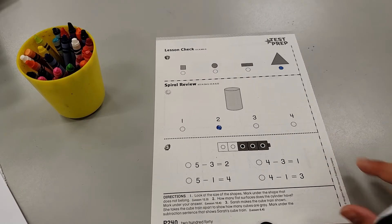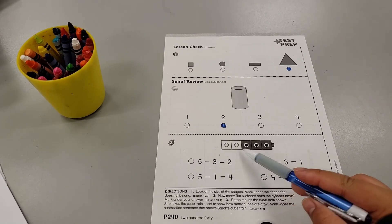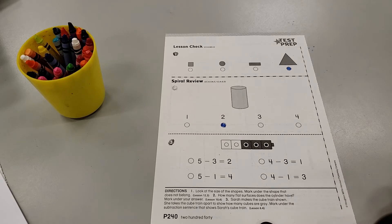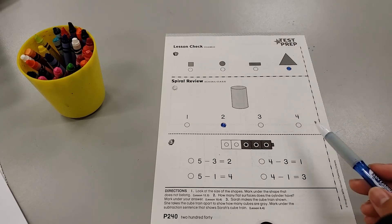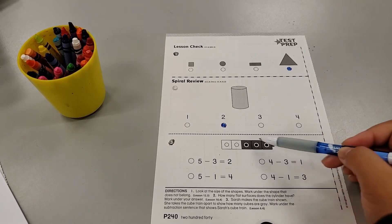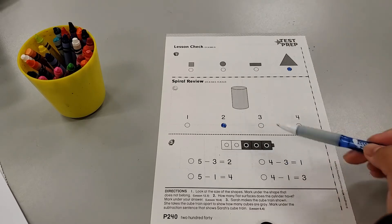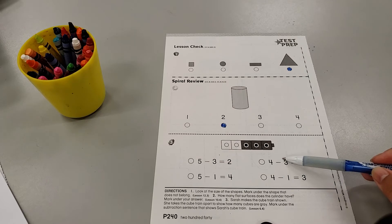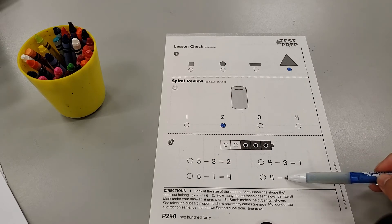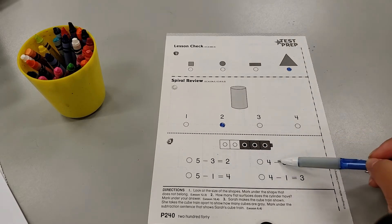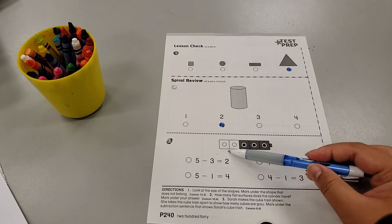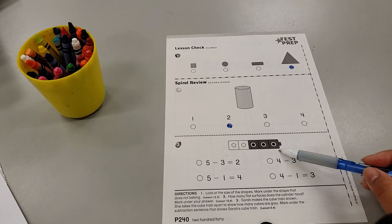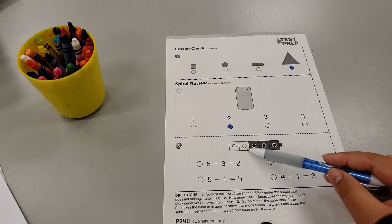All right. We have another cube train showing us two different kinds of colored cubes. We have white and gray. Now, when I look at the answers, I see what math symbol do they all have? They have minus or subtraction. So that means that this is showing take apart.